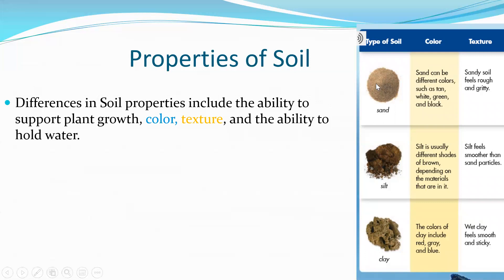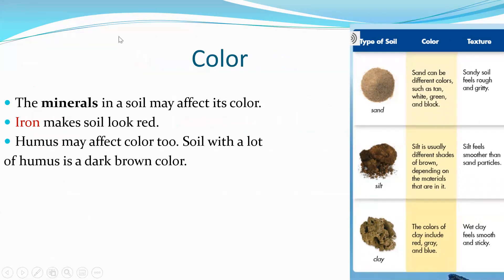We have three main different types of soil: sand, silt, and clay. Let's talk about color. The minerals in a rock may affect its color — iron makes soil look red. Humus may affect color too. Soil with a lot of humus is a dark brown color.